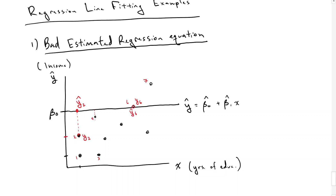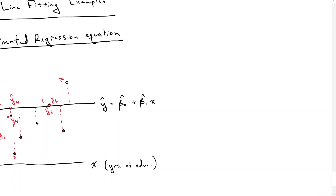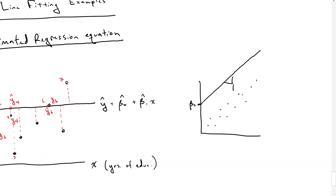An even worse example of a really bad fitting line could be something like: we start the line here at beta 0 and the slope is correct — this slope is beta 1 — but all of these residuals are huge, so we're super off on all of them. Even though the slope is right, we've started at a wrong point.